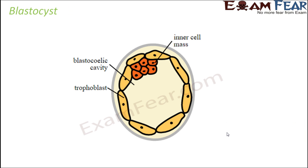Now our next topic is meroblastic cleavage, but before that let us quickly discuss the blastocyst, because we will use its terminology when explaining meroblastic cleavage. The zygote is a single cell that undergoes repeated mitotic division — forming 2, 4, 8, 16 cells — and finally forms a structure made up of 64 cells called the blastocyst.